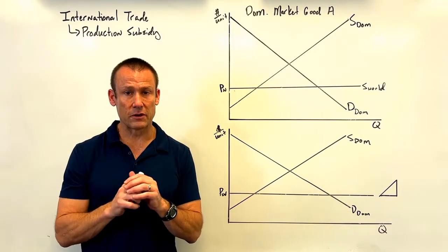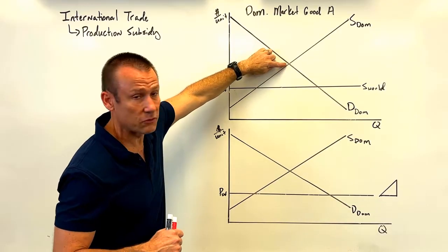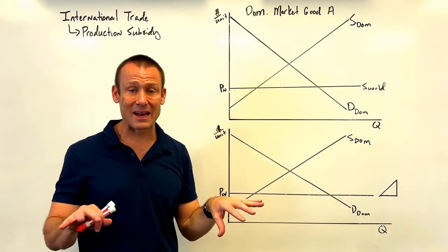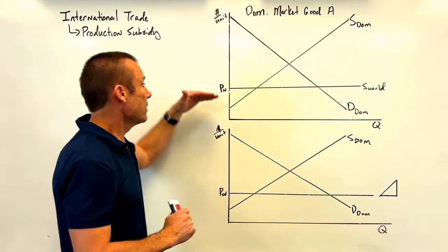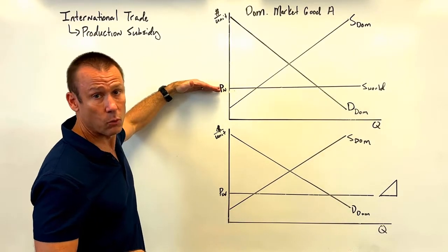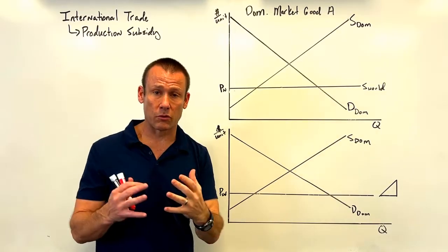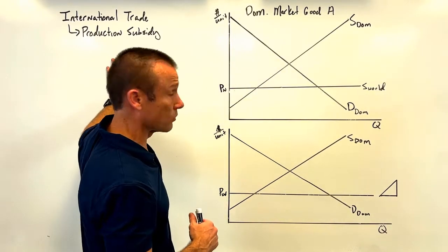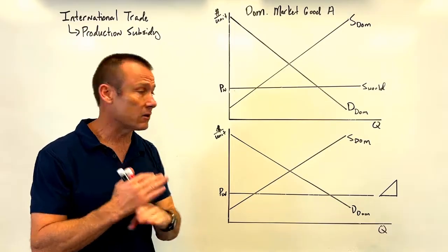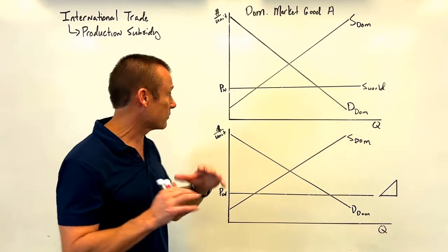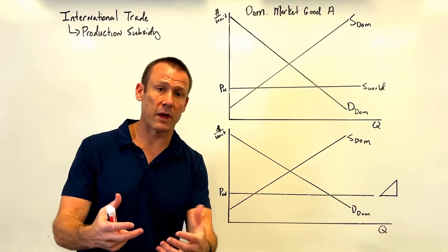What does it mean to be a net importer? Price world is below price autarky. Price autarky is where the domestic supply and demand curves intersect — the price that would prevail if they did not engage in trade. However, if they open up to trade, the price that prevails in the domestic economy is price world, which is set in a world market. When price world is below price autarky, domestic producers for the most part don't have a comparative advantage.